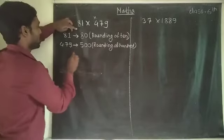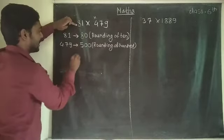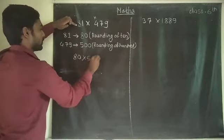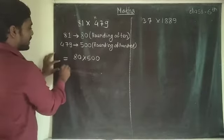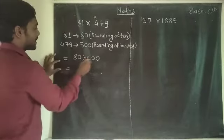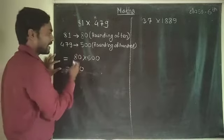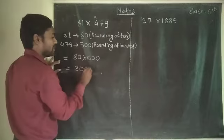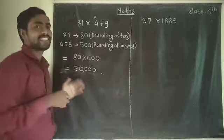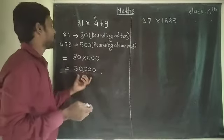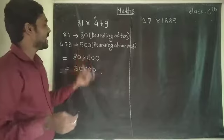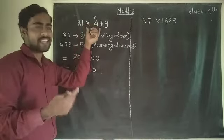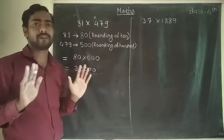Then we do the multiplication: instead of 81 we use 80, and instead of 479 we use 500. So 80 multiplied by 500. Simply 8 times 5 is 40, and with the zeros the answer is 40,000. So the estimated product of 81 × 479 is approximately 40,000.